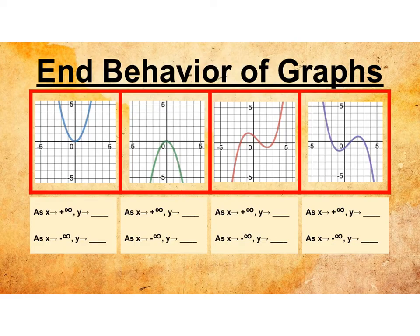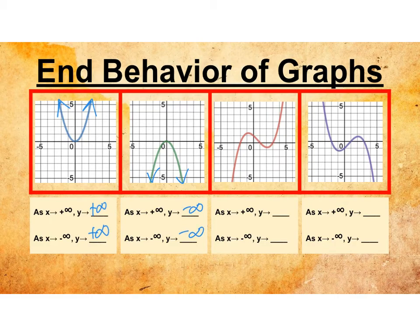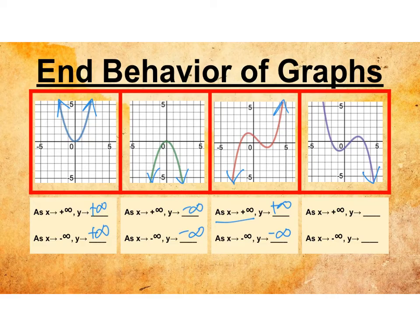Here are some examples. As x approaches positive infinity, y is approaching positive infinity; and as x approaches negative infinity, y is approaching positive infinity. In the second example, both tails point down, so they're both approaching negative infinity. In the third, as x approaches positive infinity y is approaching positive, and as x approaches negative infinity y is approaching negative infinity. In the fourth, as x approaches positive infinity y is approaching negative, and as x approaches negative infinity y is approaching positive.